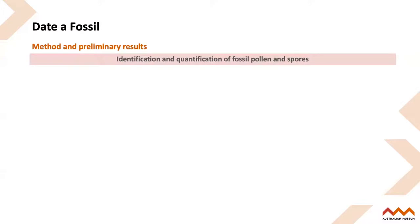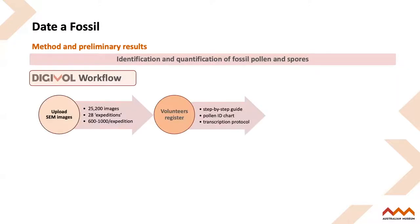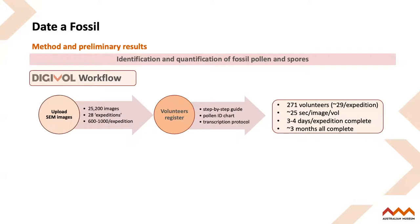To give you a brief idea of the Data Fossil method: it involved firstly uploading the SEM images into the Digivol platform. These were divided into 28 expeditions, each with 600 or 1,000 images. A call out for new and existing Digivol volunteers allowed them to register, and they were given a step-by-step guide, a pollen ID chart, and the transcription protocol. Overall, we ended up having 271 volunteers. It took about three to four days for volunteers to complete an expedition, and all 25,000 images were transcribed in about three months.